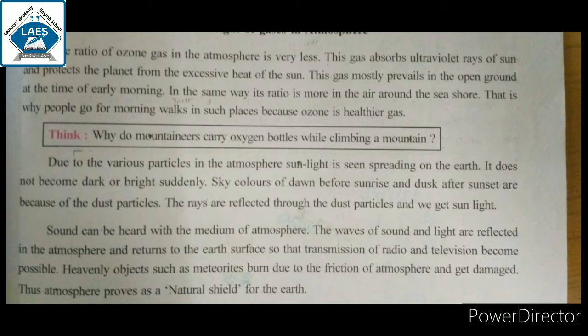The ratio of ozone gas in the atmosphere is very less. This gas absorbs ultraviolet rays of the sun and protects the planet from the excessive heat of the sun. The ozone gas ratio is very low in the atmosphere, and its main work is to absorb the ultraviolet rays and protect the Earth.